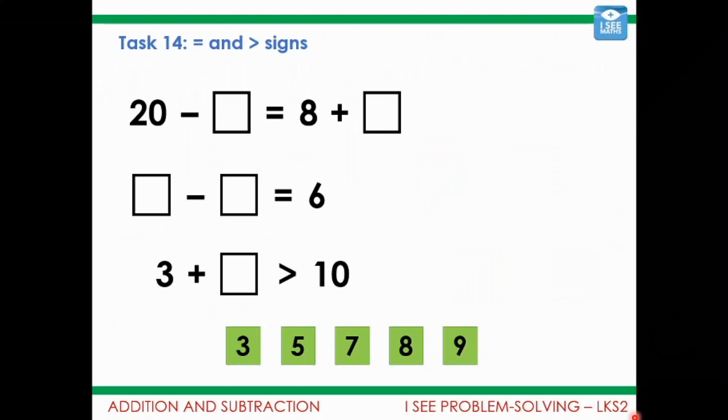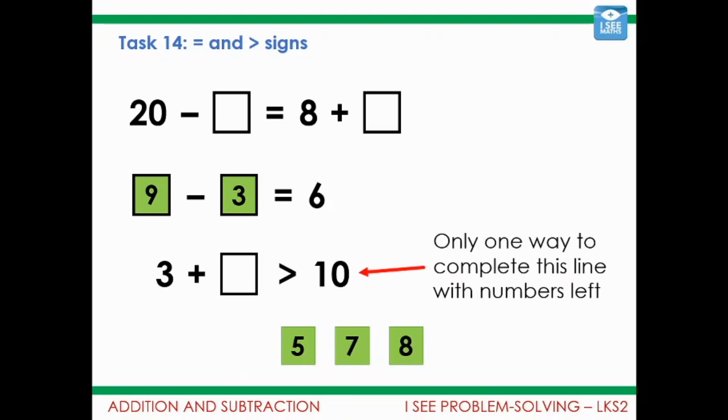Right, let's have a look. One of the key skills with a task like this is thinking, well where do I actually start? And my suggestion for this one is to start here. Because there's only actually one way to complete that line. Those numbers where the difference is 6. And the only way it can be done with the numbers that we have is 9 subtract 3. They're the only two numbers with a difference of 6.